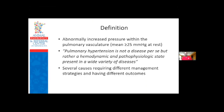The definition of pulmonary hypertension in people is having a mean pulmonary artery pressure of 25 millimeters of mercury or higher at rest. One quote I like from the consensus statement is that pulmonary hypertension is not a disease per se, but rather it's a hemodynamic and pathophysiologic state present in a wide variety of diseases. So having pulmonary hypertension isn't necessarily the diagnosis - it's something that comes along secondary to something else.